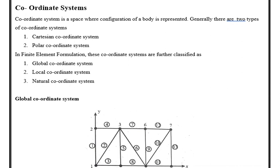Before going to what is a shape function, let us understand the basics of coordinate systems. As we know, a coordinate system is a space where any geometrical figure is represented. Until now we have learnt two types of coordinate system: one is the Cartesian coordinate system, and the other one is the polar coordinate system.